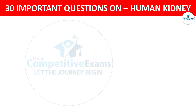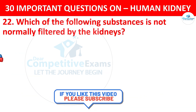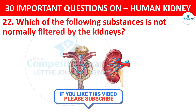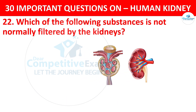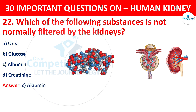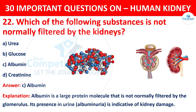Question number 22. Which of the following substances is not normally filtered by the kidneys? Your options are urea, glucose, albumin, or creatinine. The correct answer is C, that is albumin. Albumin is a large protein molecule that is not normally filtered by the glomerulus. Its presence in urine is indicative of kidney damage.